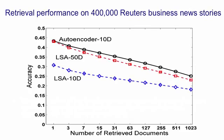Here's the accuracy of the retrieval as a function of the number of retrieved documents. You'll see that an autoencoder using a code with just 10 real numbers is doing better than latent semantic analysis using 50 real numbers. And of course, it's five times less work per document after you've got the code. Latent semantic analysis with 10 real numbers is much worse.